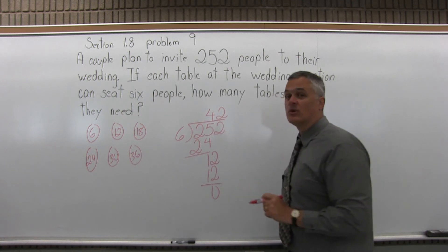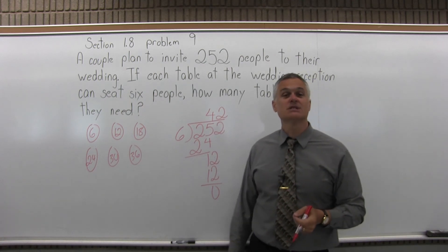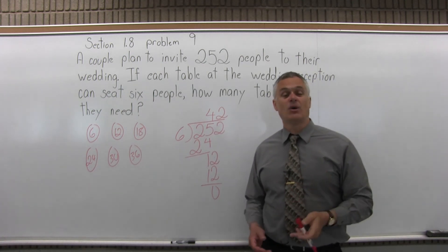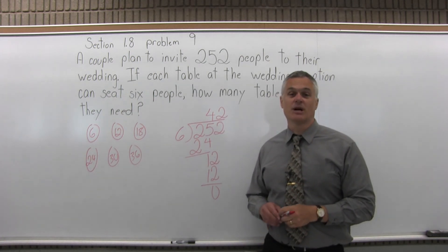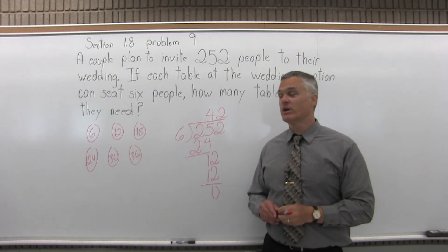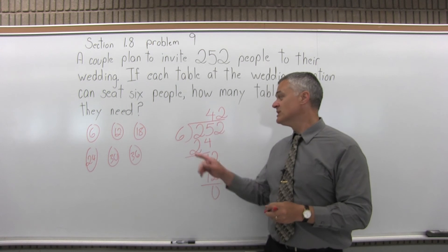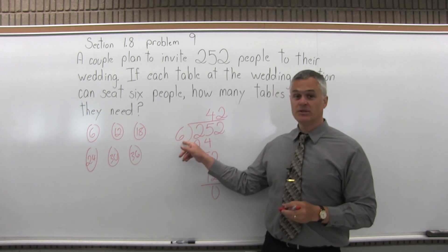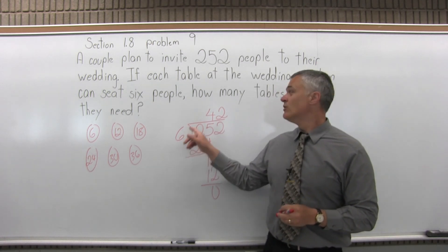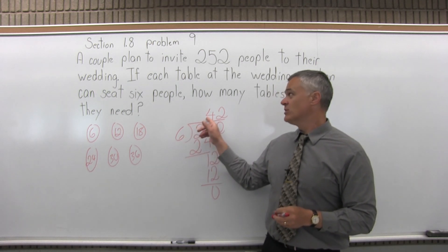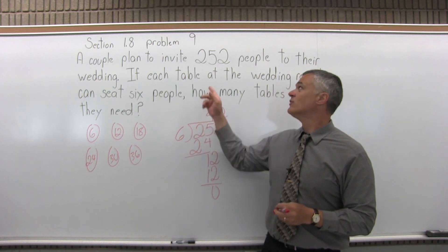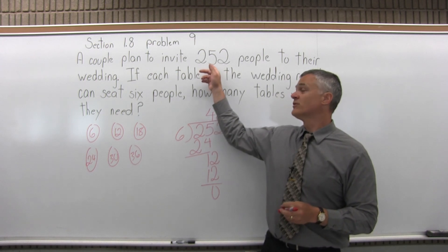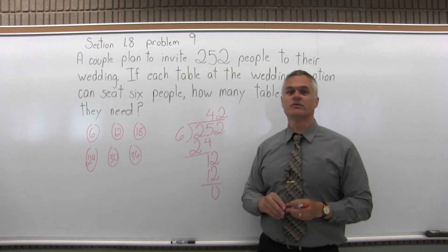I get an answer of 42, and that answer is how many tables the couple needs for their wedding reception. If you can seat 6 people per table, 42 tables will have seating for the total number of guests, 252. We'll be right back.